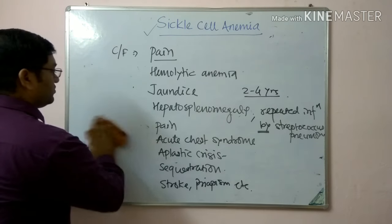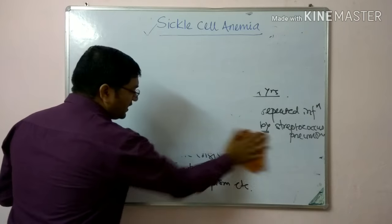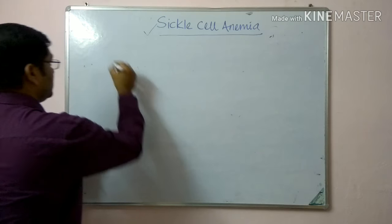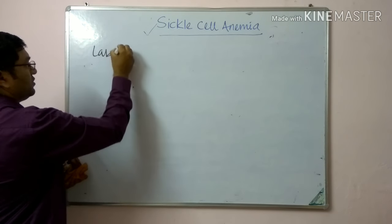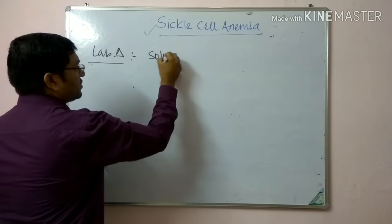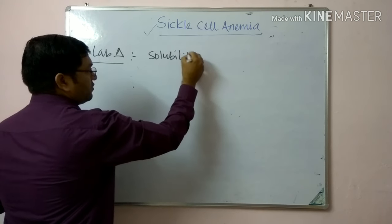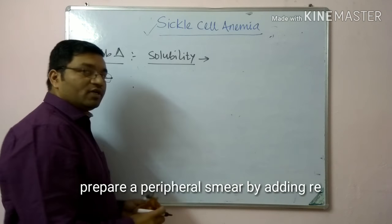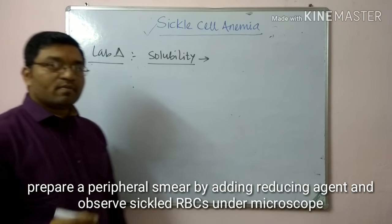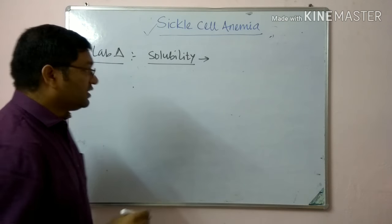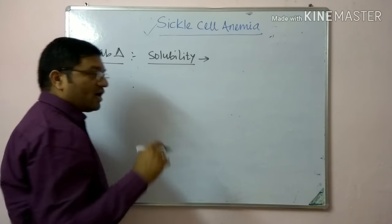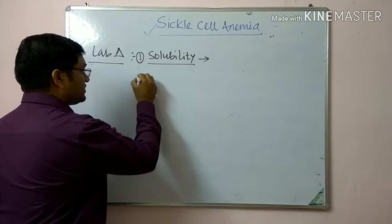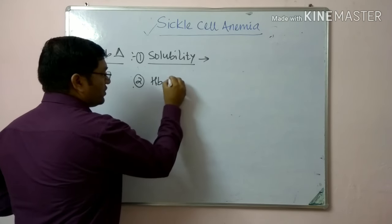Coming to laboratory diagnosis: the screening test is the sickling test or solubility test. The first test is the solubility or sickling test performed on a peripheral smear by adding a reducing agent — sodium metabisulphite or sodium dithionite — and observing sickle RBCs under the microscope.